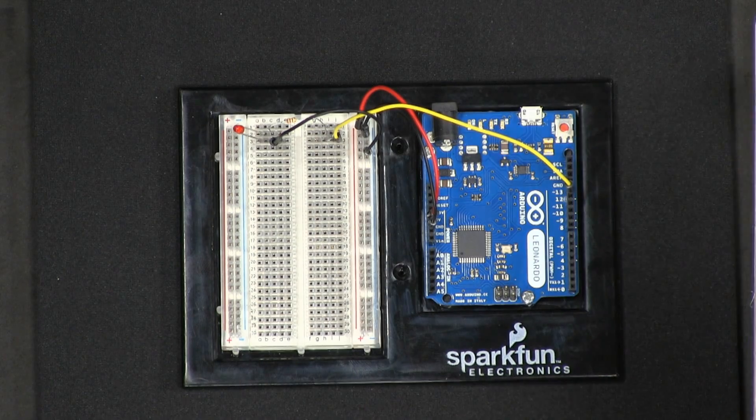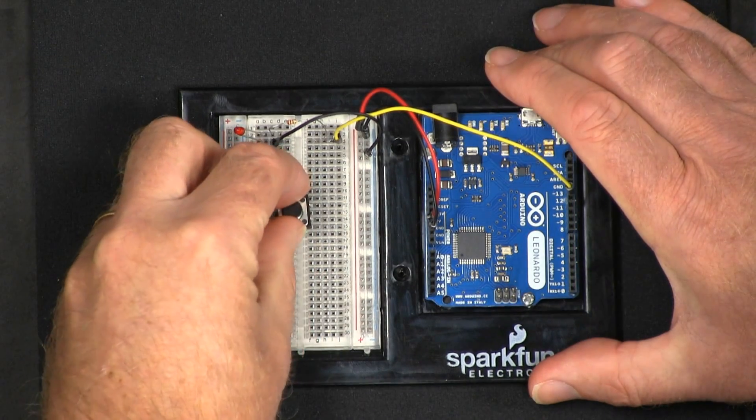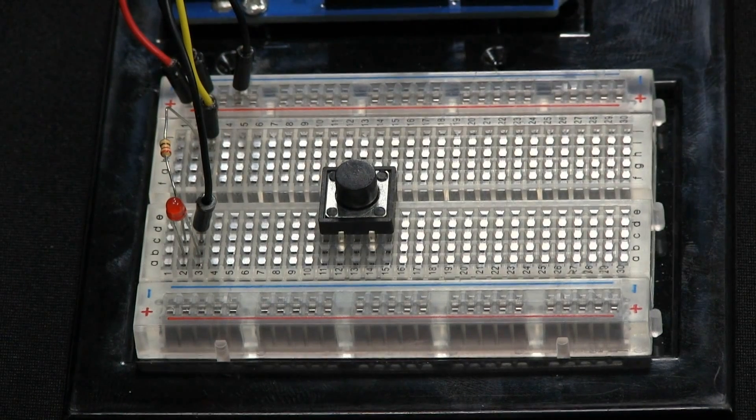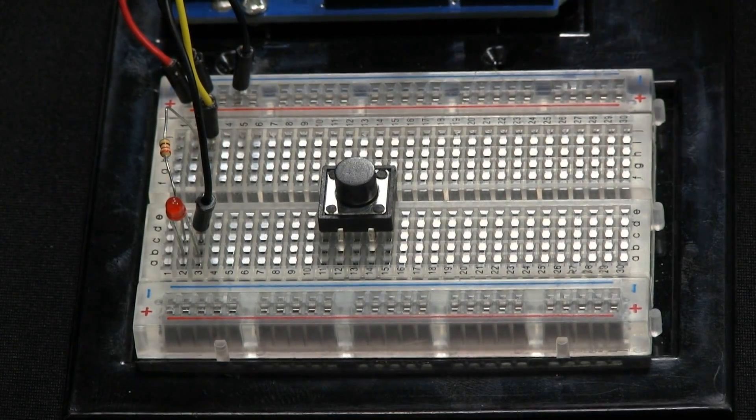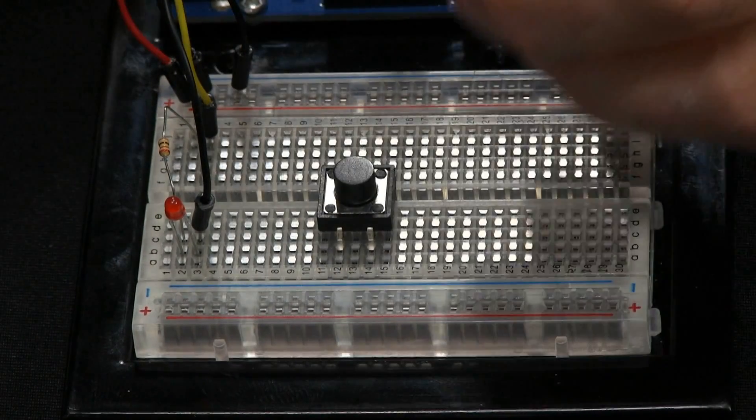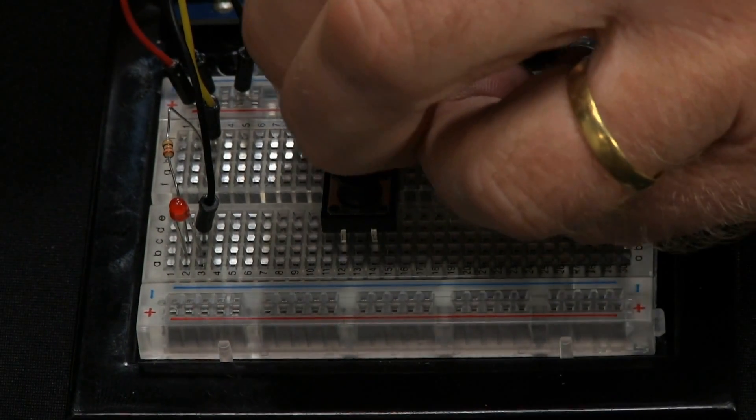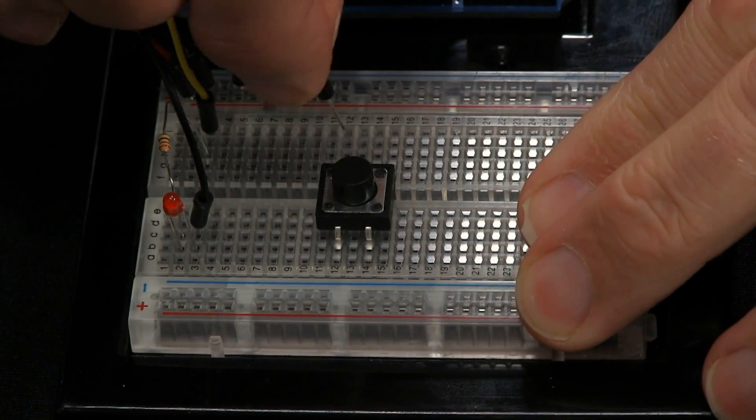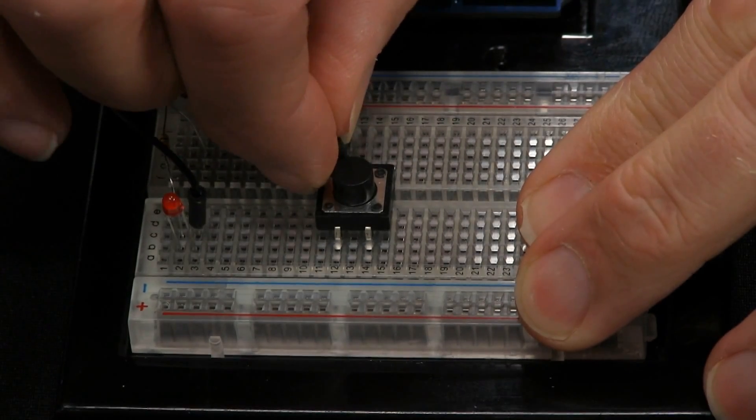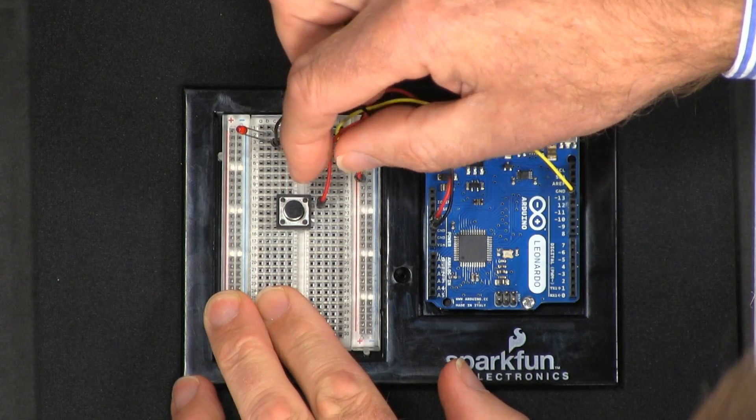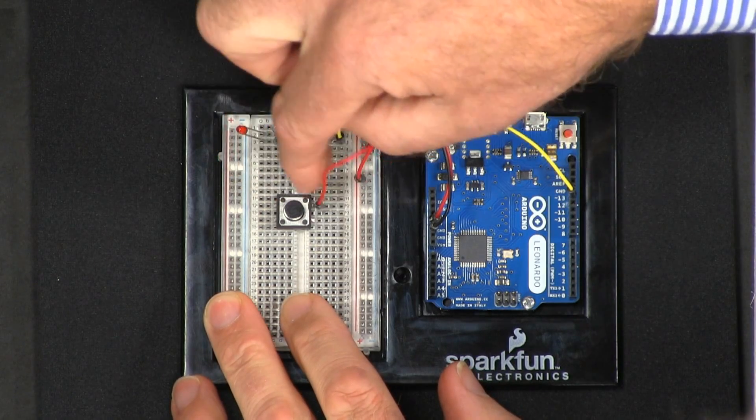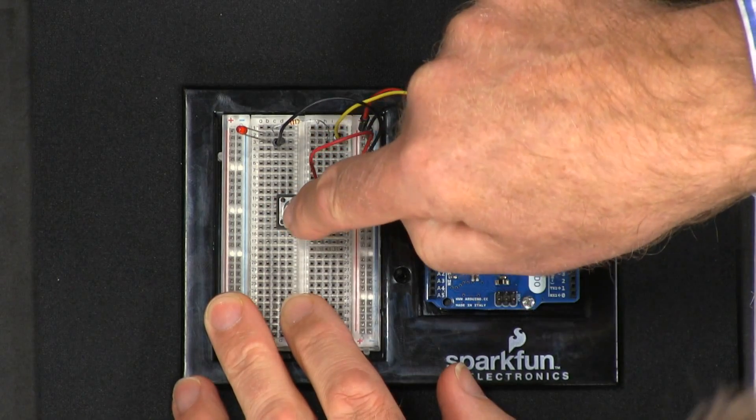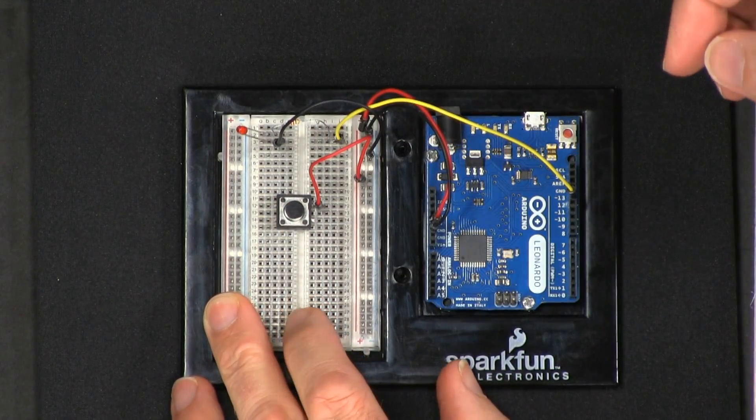So now we're going to connect up the switch. The switch we'll put in here. It has to be pressed fairly firmly so the legs connect in. Then on one side of the switch we want to connect the five volts. So again we'll take from the five volts bus at the top here and we'll connect it to that side of the switch. So the switch has four pins on it. The pins on this side are both connected together, but when you press the switch then all four pins are connected together.